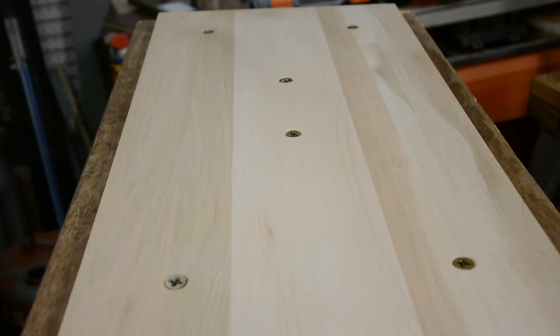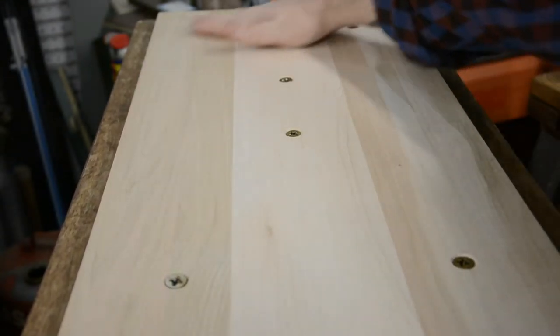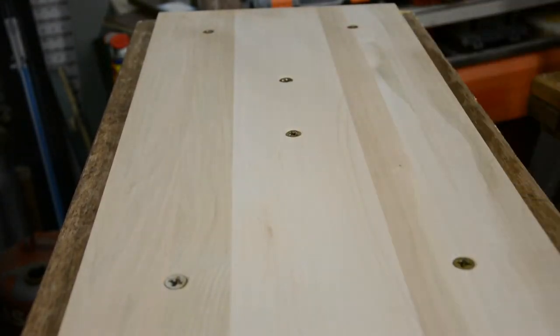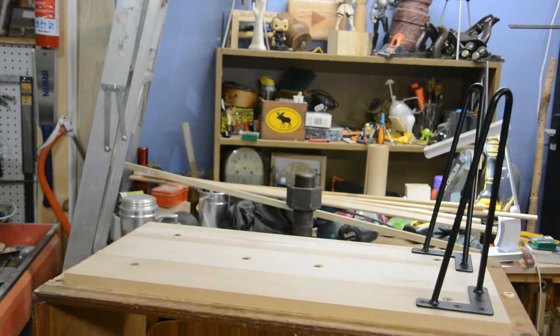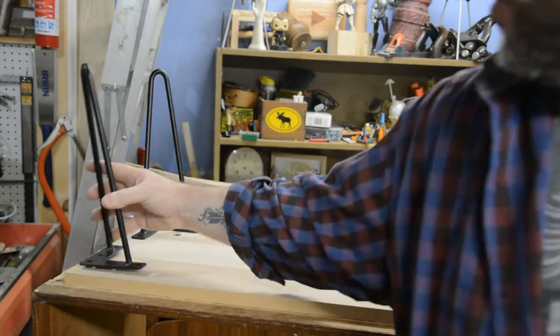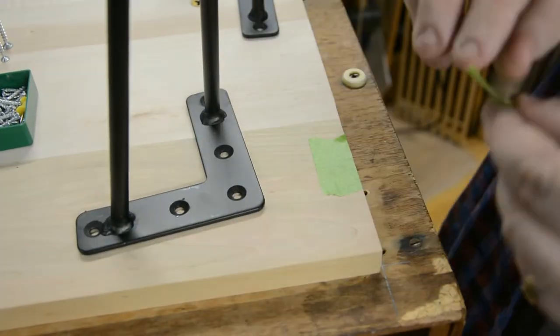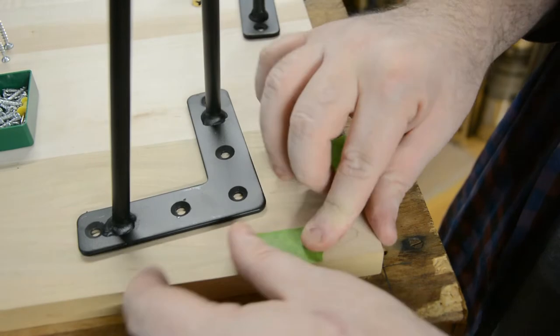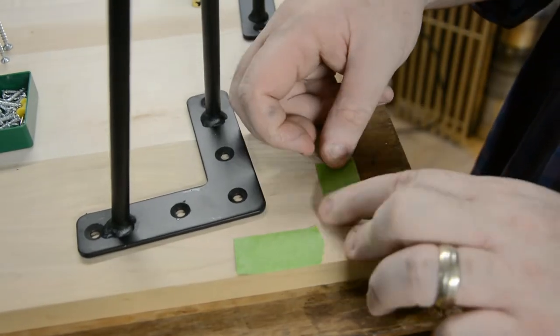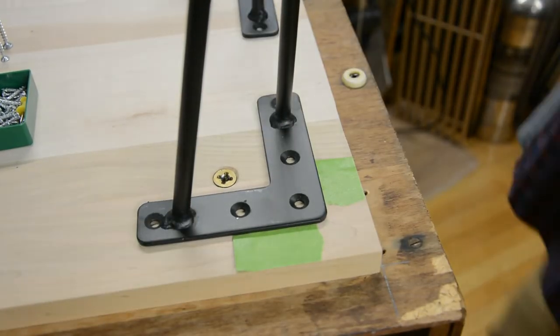Now that these six monster screws are in place, I know that the base of this cabinet is definitely strong enough to support that hundred pounds that we're looking to support. Next up is simply to add the four hairpin legs. I got these on Amazon, and I gotta be honest, I'm a little surprised at how good the quality was. Not that I was expecting them to be bad or anything, but these are super solid, and I like them.